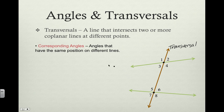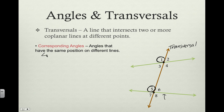The first group of angles are called corresponding angles. These are angles that have the same position but are on different lines. For example, angle one is in the upper left-hand corner of the four angles here. Its corresponding angle is angle five down here, which is in the same exact position but on the second line. So angle one and angle five would be considered a pair of corresponding angles.